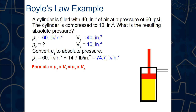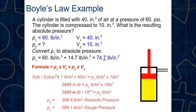The resulting absolute pressure is 298.8 psi. But remember — if they ask for gauge pressure, don't get tricked: subtract 14.7 to get 284.1 psi gauge pressure. Always check what kind of answer is being asked for.